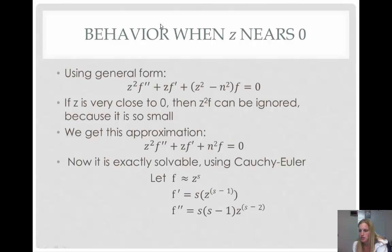After that, we get this approximation: z squared times f double prime plus z times f prime minus n squared times f equals zero. Now, it is exactly solvable using Cauchy-Euler. So, we can let f equal z to the s. And then, we can take the first derivative, which gives us s times z to the s minus one, and the second derivative, s times s minus one times z to the s minus two.